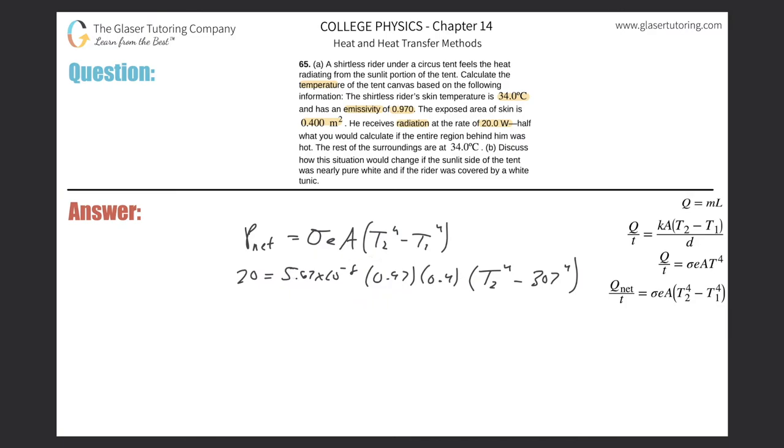So why don't we just combine these terms and then divide them out on the right-hand side? So basically I'm going to take 5.67 times 10 to the minus 8 multiplied by 0.97 multiplied by 0.4. And then I'm going to take 20 and divide it by that whole multiplication. So now this works out to be 9.09 times 10 raised to the...